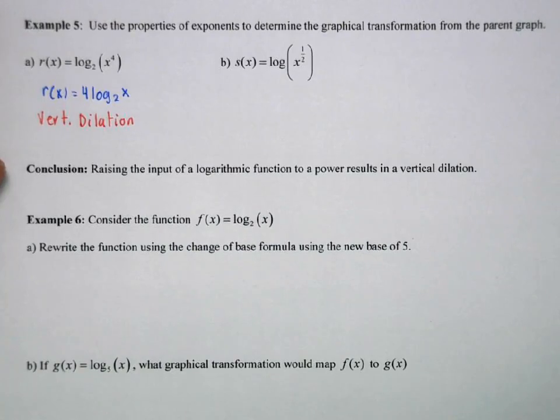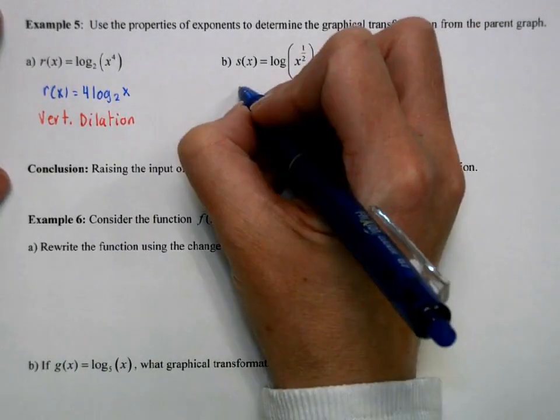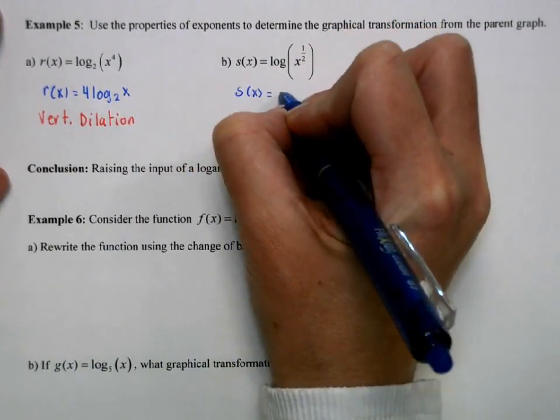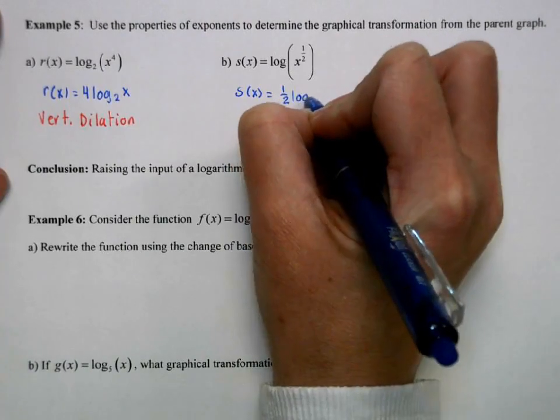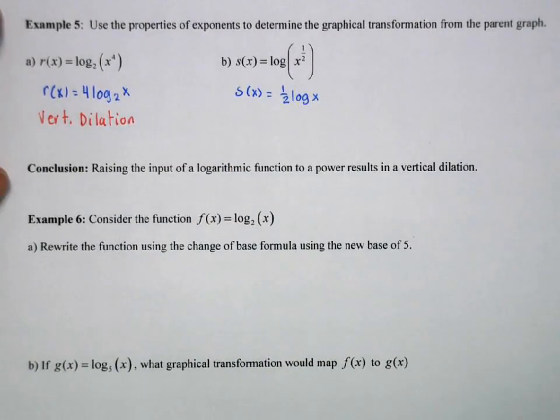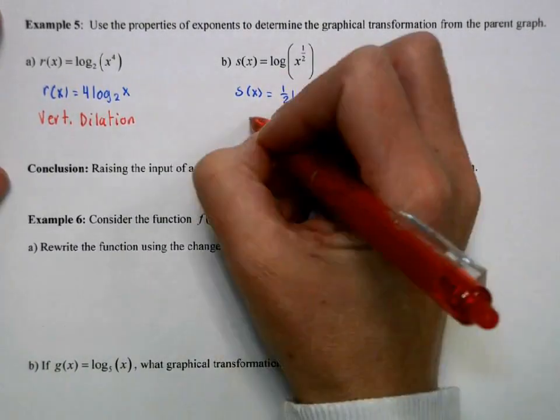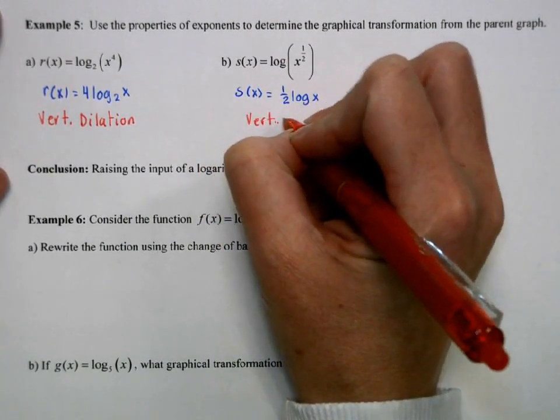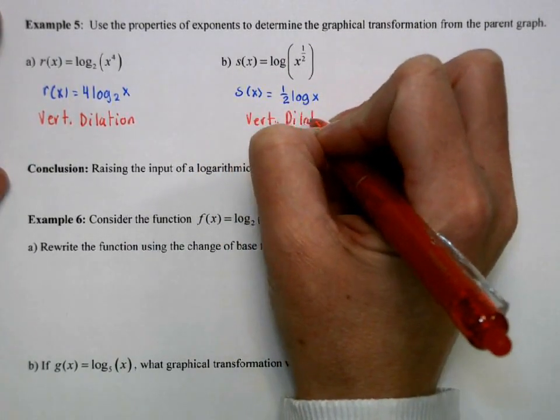Here this is equivalent to 1 half log x so that's going to be a vertical dilation by a factor of 1 half. So that graph is going to get compressed vertically.